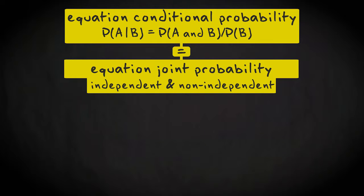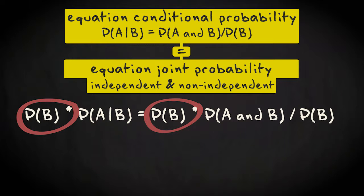If you multiply both sides with the marginal probability for event B, you have an expression to calculate joint probability.